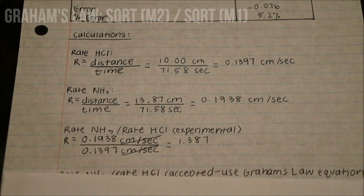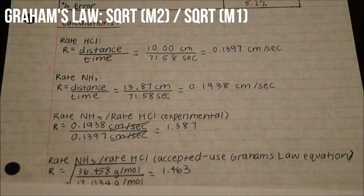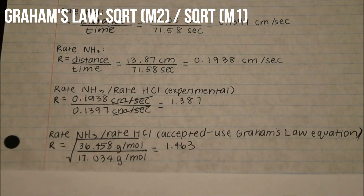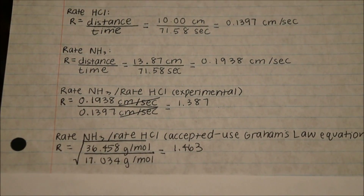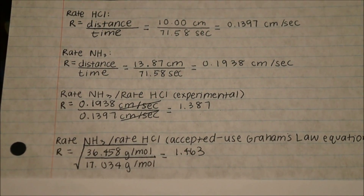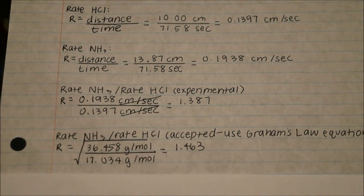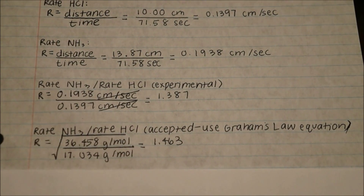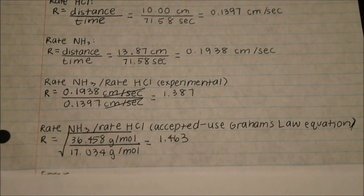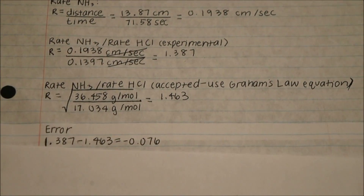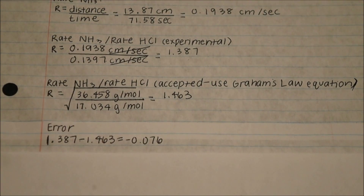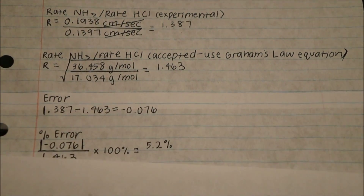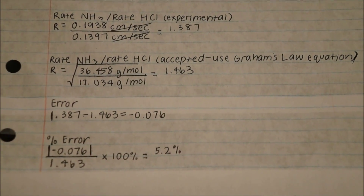Now we must compare that to the accepted rate. To calculate that, we use Graham's Law equation: the molar mass of HCl divided by the molar mass of ammonia, and we take the square root of that quotient, which comes out to 1.463. The error of our experiment was negative 0.076, and the percent error of our experiment was 5.2 percent.